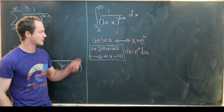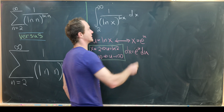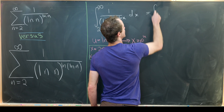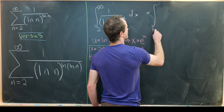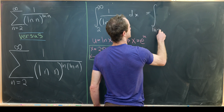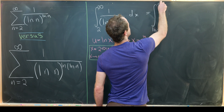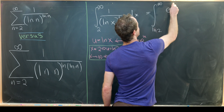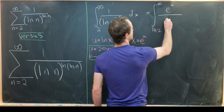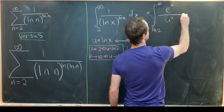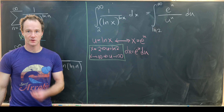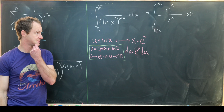Let's see what our transformed integral looks like. We'll have the integral from natural log of 2 up to infinity of e to the u over u to the u du.